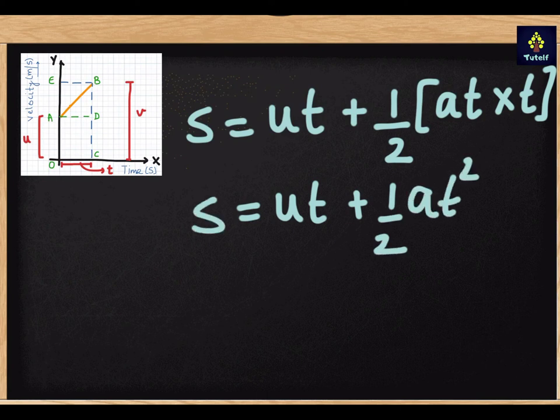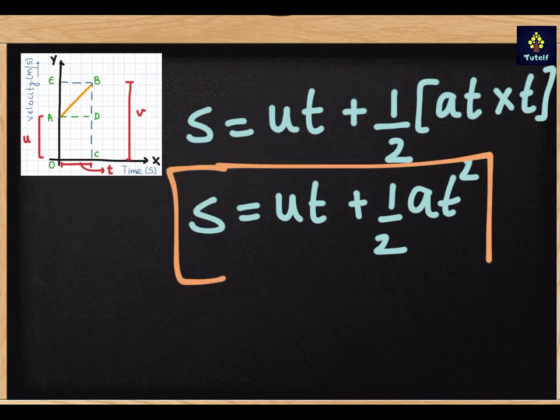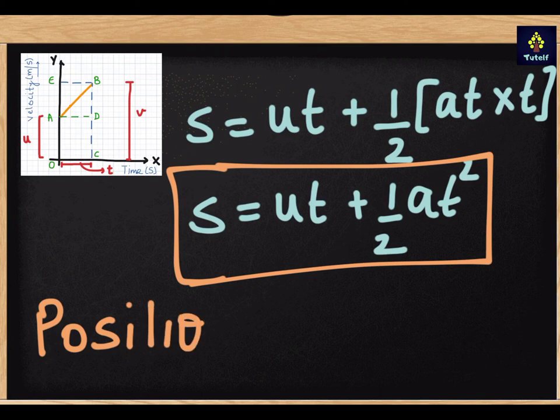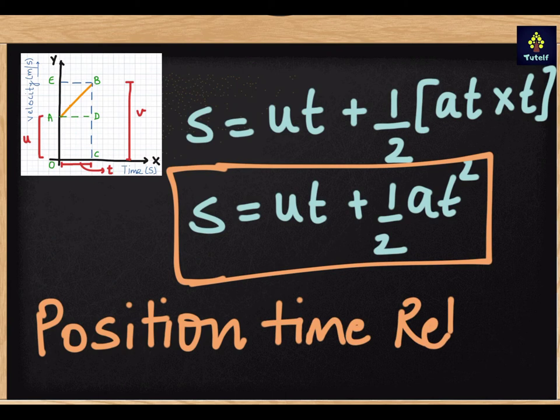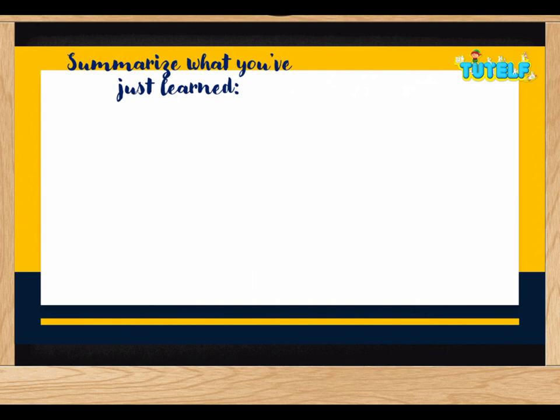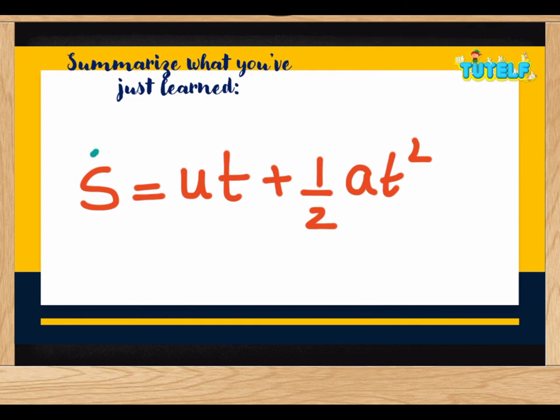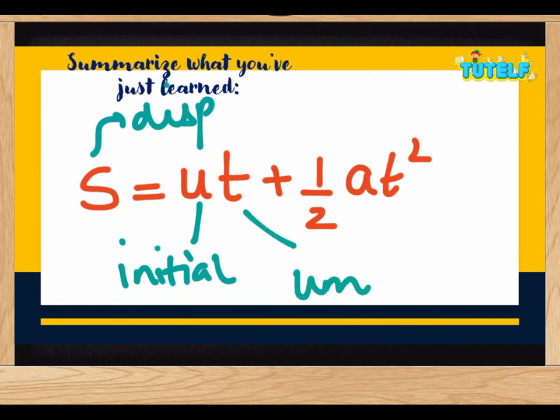Now let's conclude what we have learned today. We have learned that S is equal to UT plus half AT square, which is the second equation of motion, where S is the displacement, U is the initial velocity, T is the time taken, and A is the acceleration.